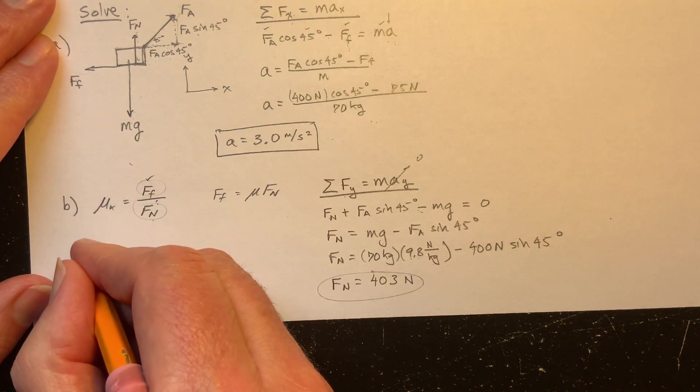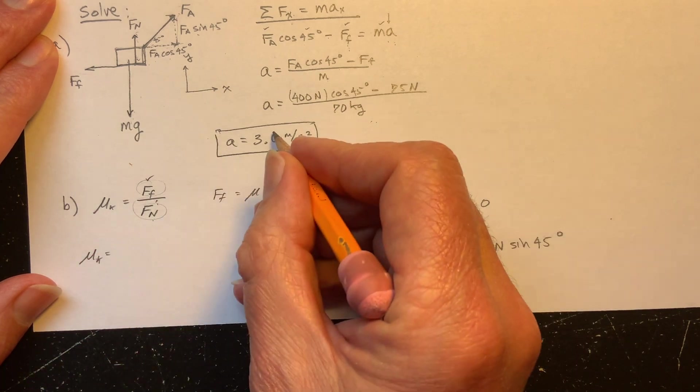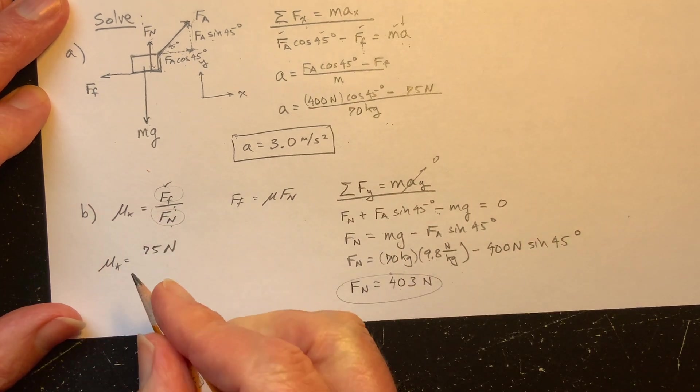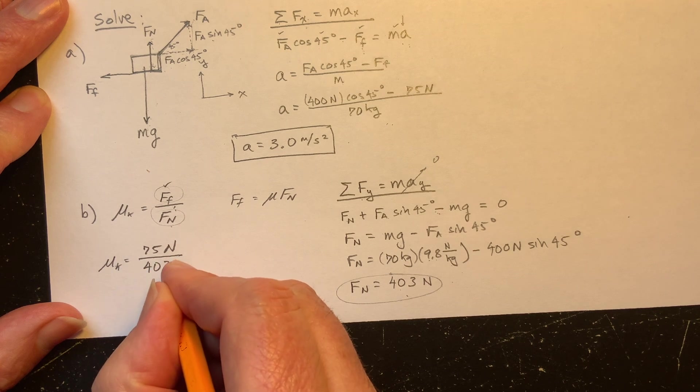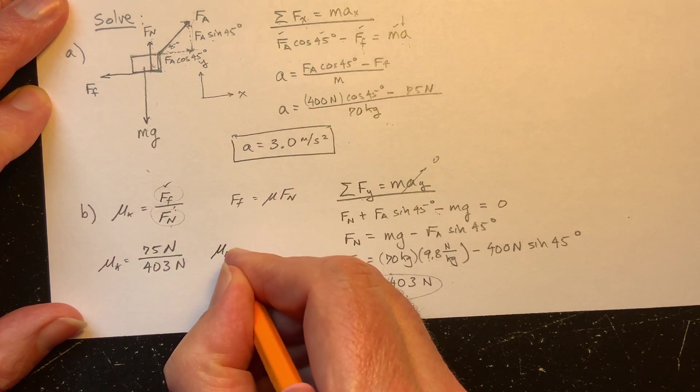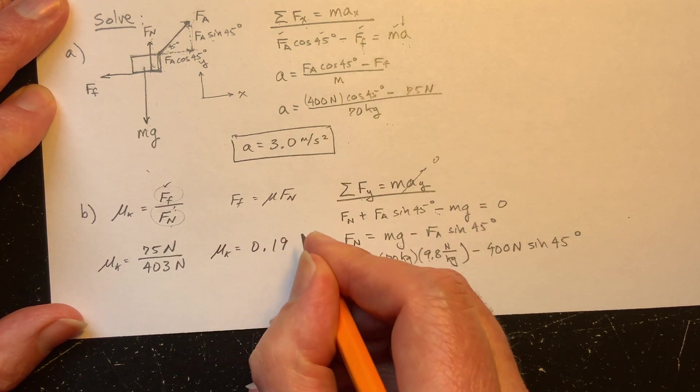And now, we just plug all that into the calculator. And when I did, I got 403 newtons. So now I know what the normal force is, and I know what the force of friction is. So now I can solve for mu. So mu, the kinetic friction, is the force of friction, which was given to be 75 newtons, divided by the normal force that I calculated. And when I plug those into my calculator, I get a value of 0.19.